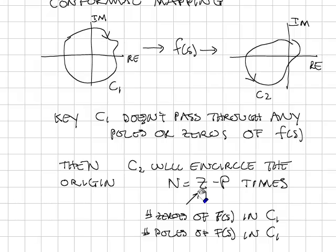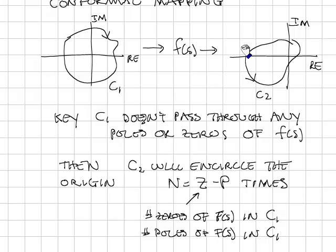Note that N can be positive or negative. If it's positive, that means the encirclements are in the same direction as C1. If it's negative, the encirclements are in the opposite direction.